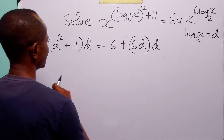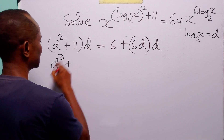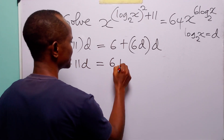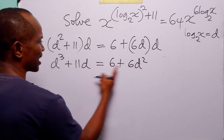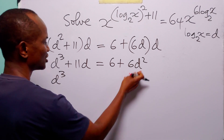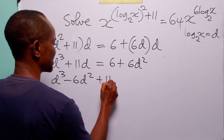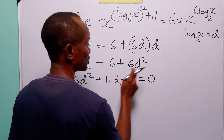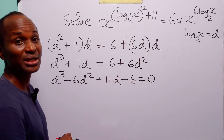Opening these brackets, we have d squared times d — that is d cubed — plus 11d. And this is equal to 6 plus 6d times d, which is 6d squared. Rearranging this equation, we have d cubed minus 6d squared plus 11d minus 6 equals 0. You can see that we have a cubic equation.